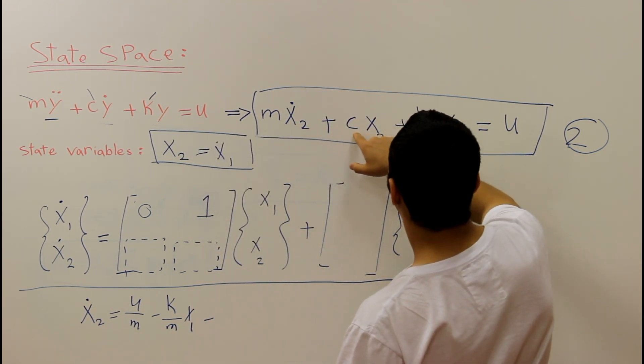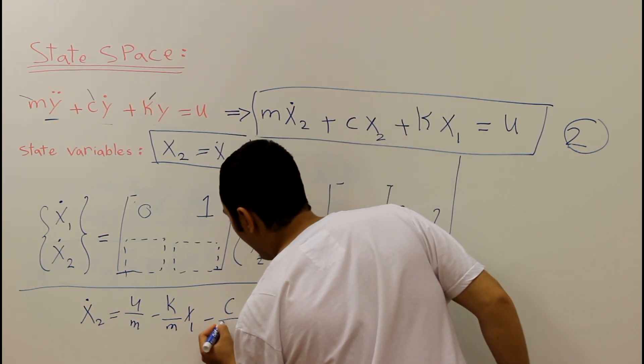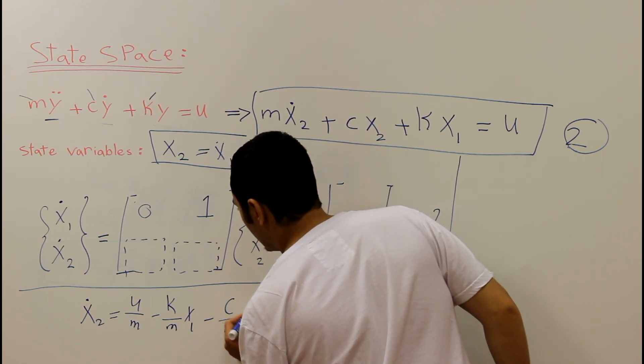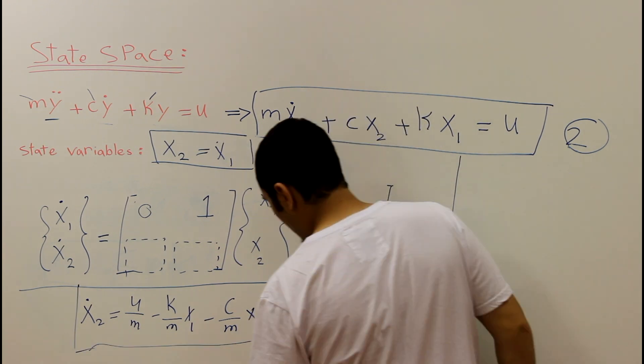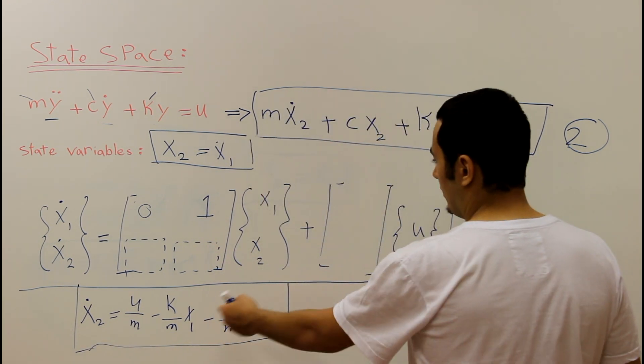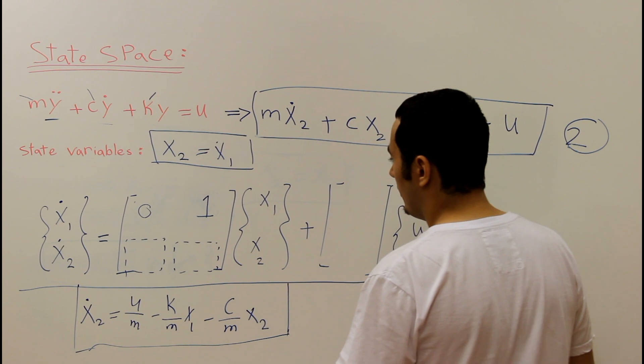minus finally c divided by m x2. Okay so this is x2 dot in terms of this equation.